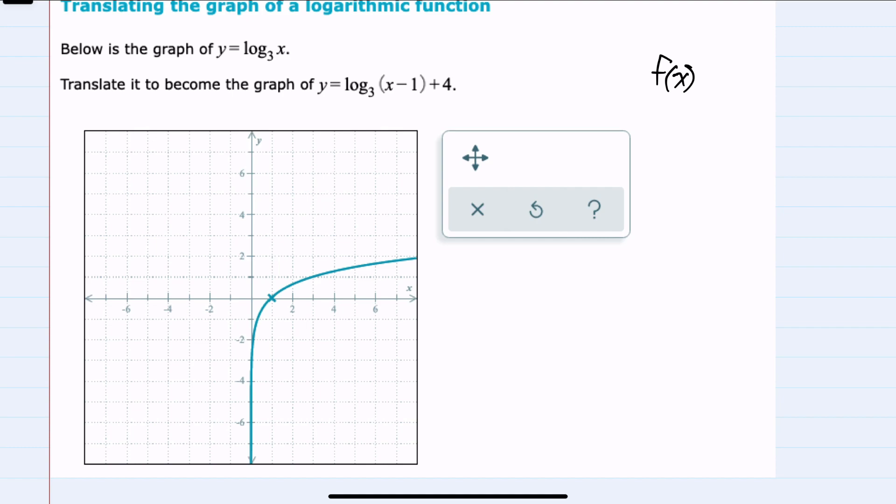We'll start by recalling that when we have a function f(x), when we add or subtract a constant to the end of f(x), so just adding a number, when c is negative, so we're adding a negative or subtracting, that will translate our graph down. And when c is positive, that will translate our graph up.